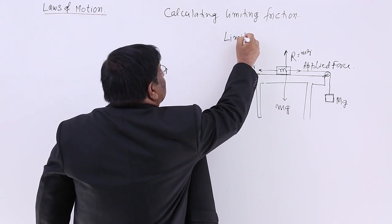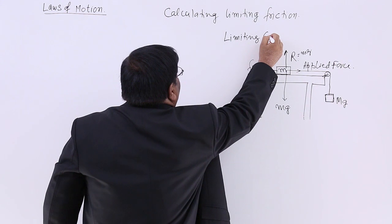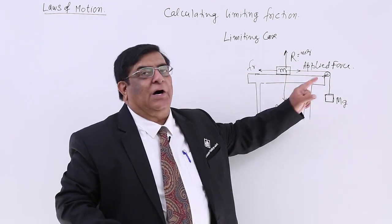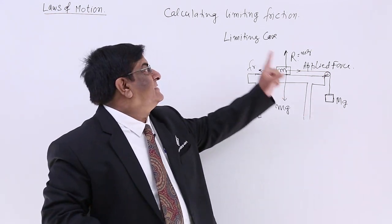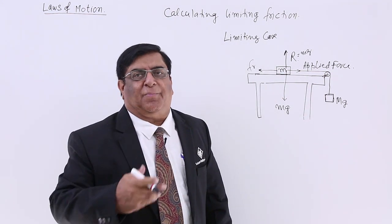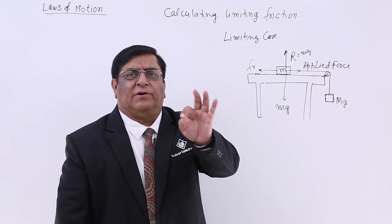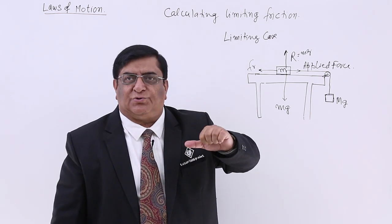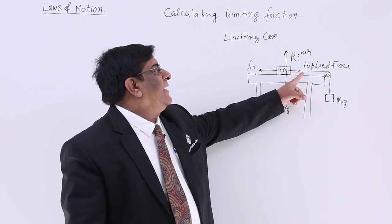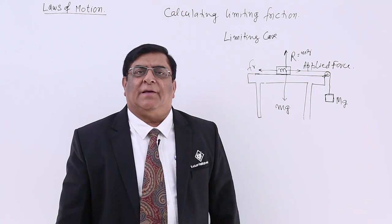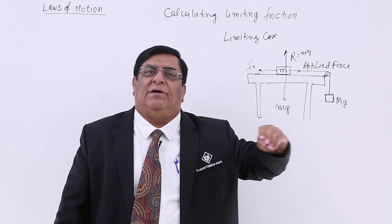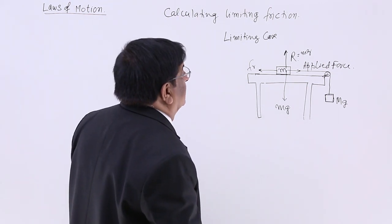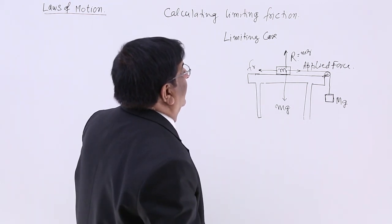This case is known as the limiting case. In other words, if I want to move the body, how much force should I apply? Answer: in the limiting case, I should apply the limiting friction. So if limiting friction is 5 Newton, how much force should I apply to move it? 5 Newton. The moment I cross 5 Newton, it will start moving. So that relation we have to see.